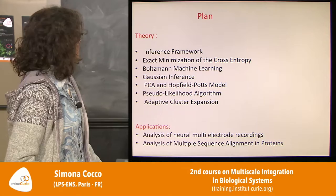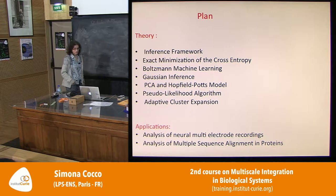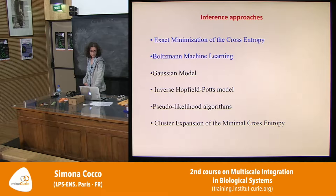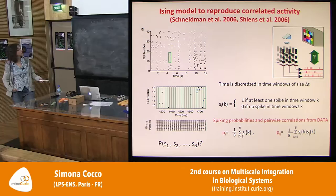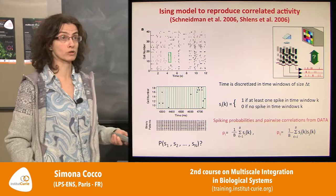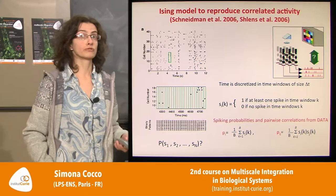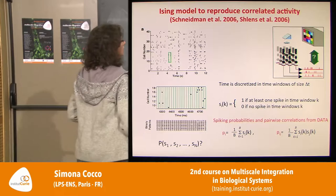The data are neural multi-electrode recordings and multi-sequence alignments in proteins. I will start by the inference approaches — the exact minimization of cross entropy and Boltzmann machine learning — following a paper by the group of Bialek in 2006. This was very important because they applied this inference approach on retinal data and showed the importance of introducing couplings between neurons to reproduce the statistics.